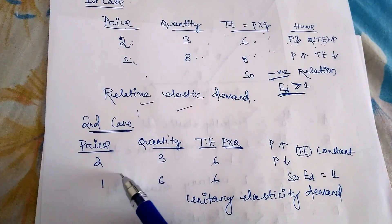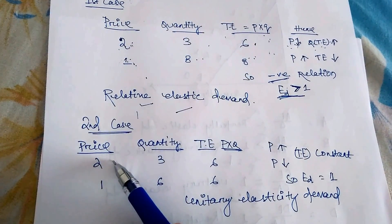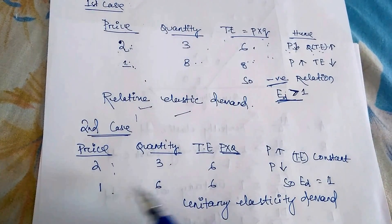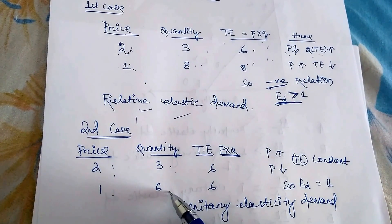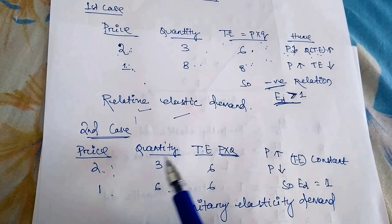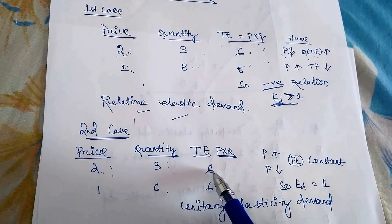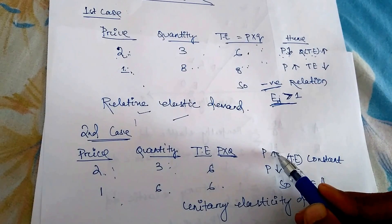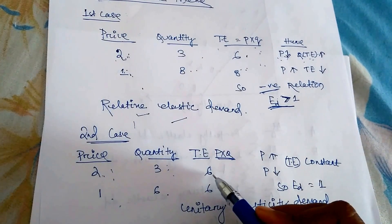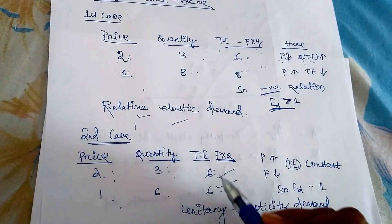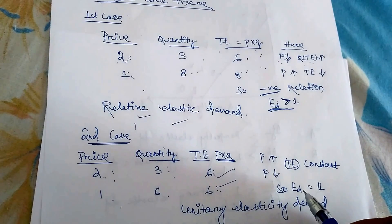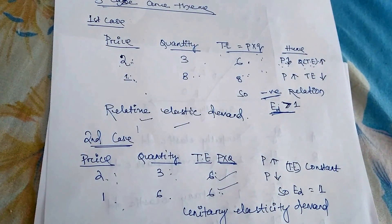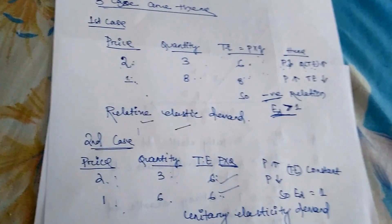Case 2: Price = 2, Quantity = 3 → T = 6; Price falls to 1, Quantity rises to 6 → T = 6. Total expenditure remains the same whether price rises or falls. This means ED = 1 → unitary elasticity of demand.